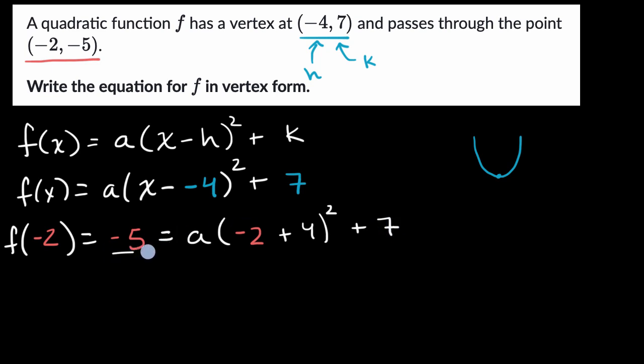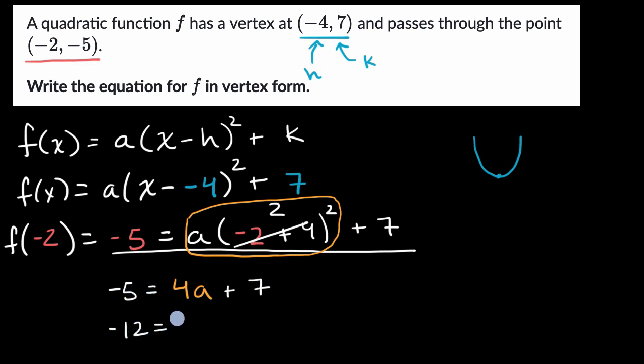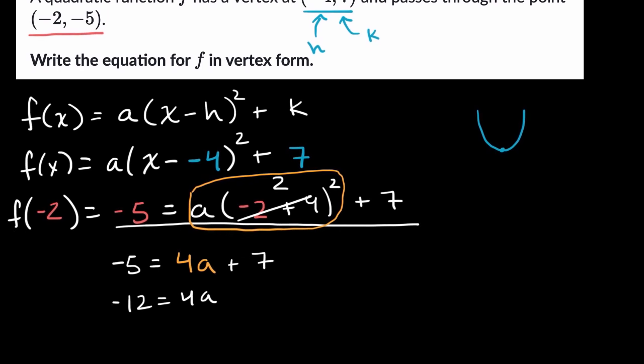And so now we just have to solve this part here. So we get negative five is equal to, what is negative two plus four? Well, that's just going to be two. Two squared is four, so this all simplifies to four a is equal to four a plus seven. We can just subtract seven from both sides and we get negative 12 is equal to four a. Divide both sides by four to solve for a, and we get a is equal to negative 12 divided by four, which is equal to negative three.